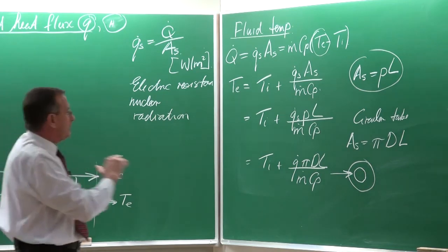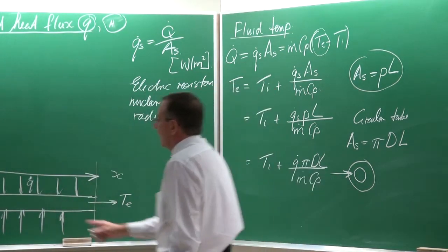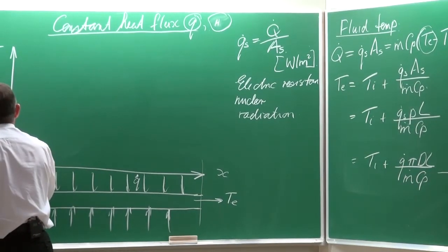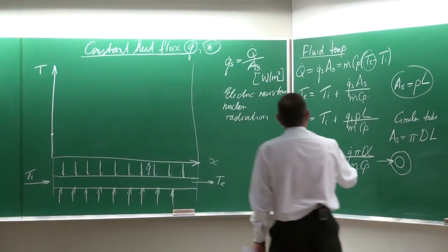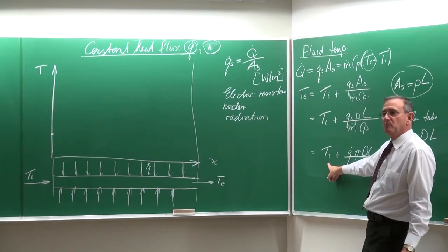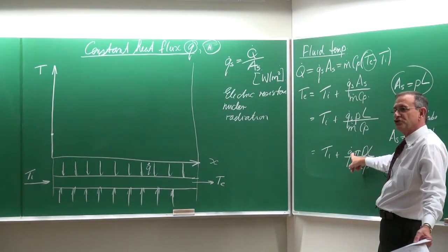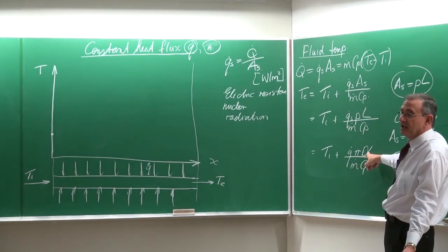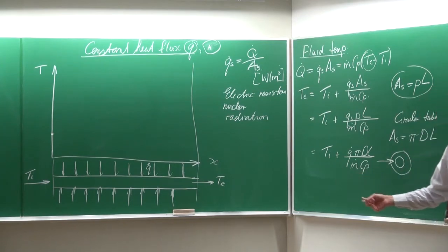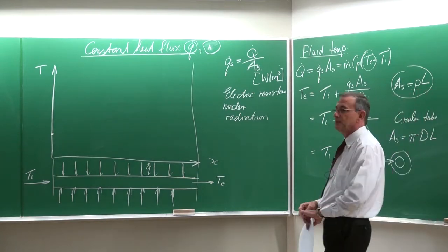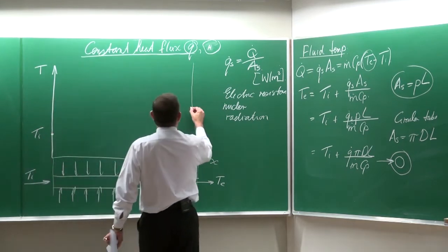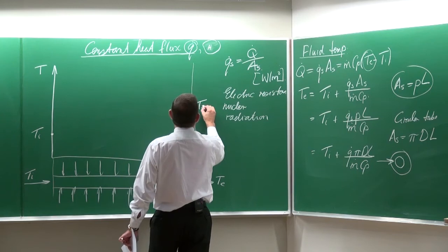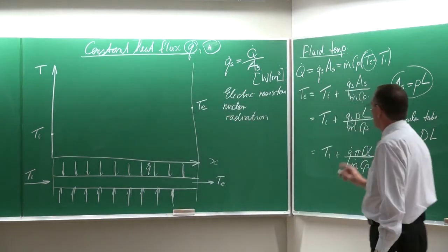If we take a look at this equation and say the inlet temperature is known and we want to get the outlet temperature, then it says the outlet temperature equals the inlet temperature plus the heat flux — which is a constant — times pi, the diameter, times the length, divided by the mass flow rate and Cp. So we can solve everything from this. If that is T inlet, then that would be T outlet. So we've got the outlet temperature from this equation.